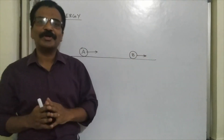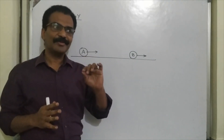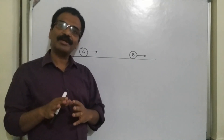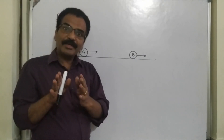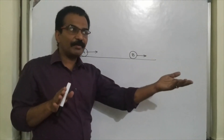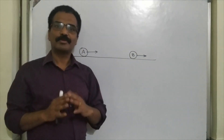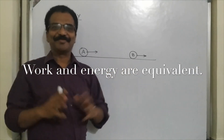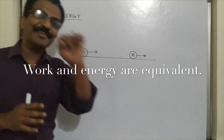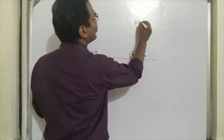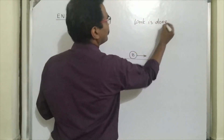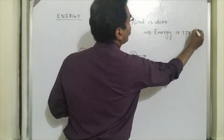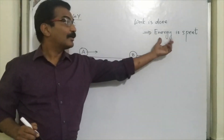So it is not wrong to define work like this: work is defined as the transfer of energy. Whenever work is done, energy is transferred. Work can be converted into energy, and energy can be converted back to work. Work and energy are inter-convertible — they are the same. Work is done means energy is spent.